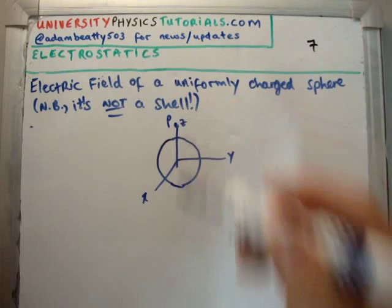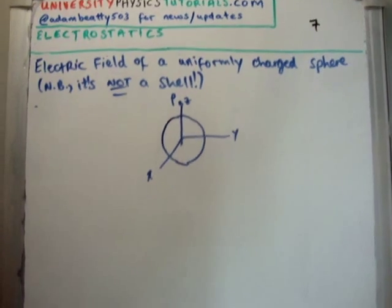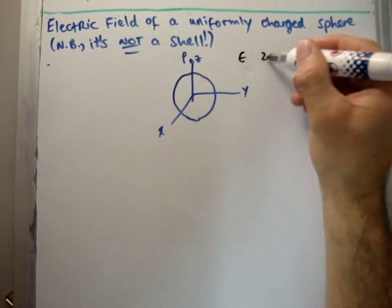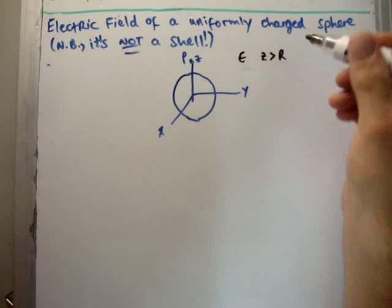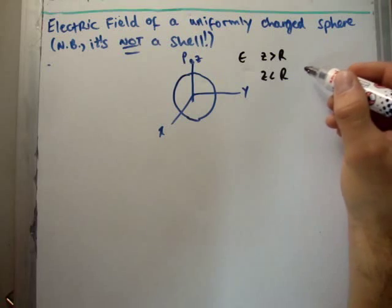We measured the electric field at point P above. We found that we had two things. We could measure the electric field at the distance outside the shell, z greater than r, or inside the shell, z less than r.